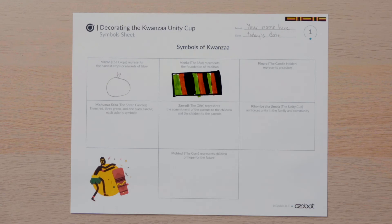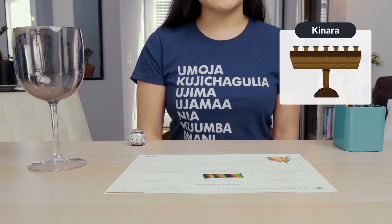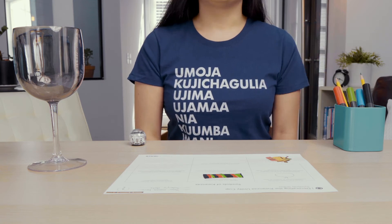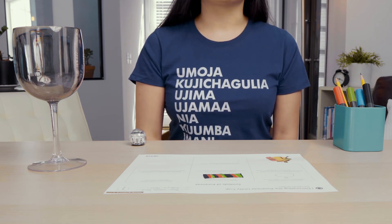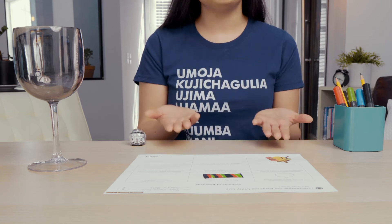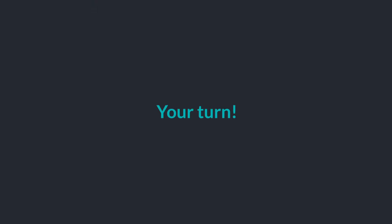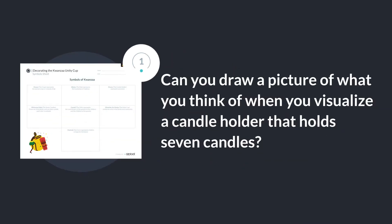The last box in the first row says Canara, or candle holder. The Canara represents ancestors — those who came before us, like grandparents, great-grandparents, or great-great-grandparents. Ancestors laid a foundation for who you are and what you have today. The Canara holds seven candles. Can you draw a picture of what you think of when you visualize a candle holder that holds seven candles?